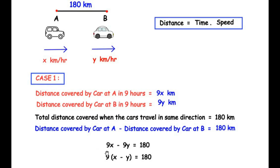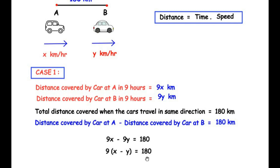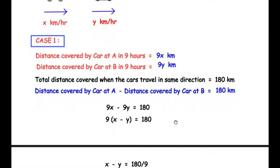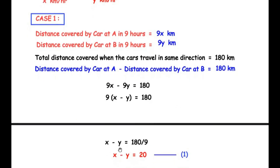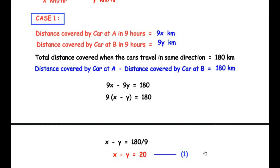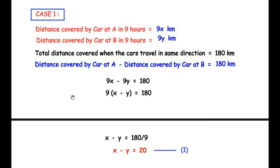Since 9 is a common factor, we take it out: 9 times (x minus y) equals 180. Dividing both sides by 9, we get x minus y equals 20, because 9 times 20 equals 180. We consider this as Equation 1.